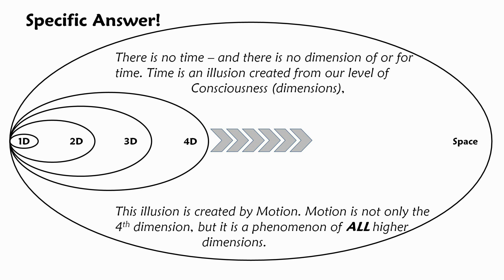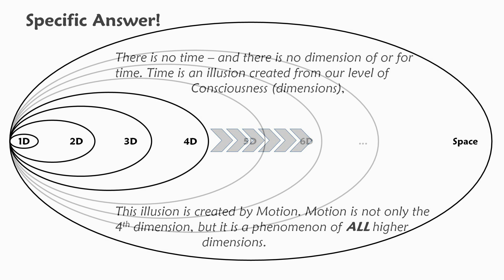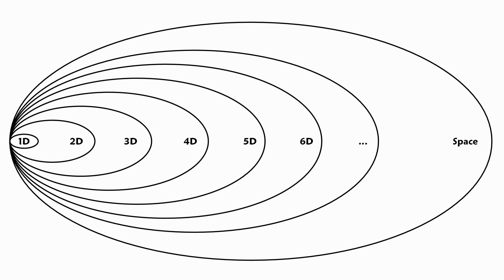This is how the answer is worded correctly. There is no time at all. There is no dimension of or for time. Time is an illusion created from our level of consciousness. This illusion is created by motion. And motion is not only the fourth dimension, but the phenomenon of all higher dimensions. Now that we know that time is all higher dimensions, which dimension is gravity?